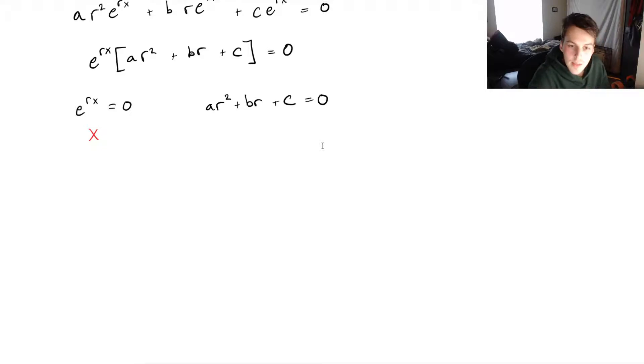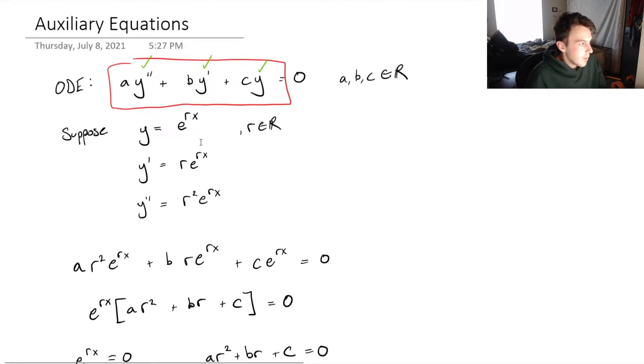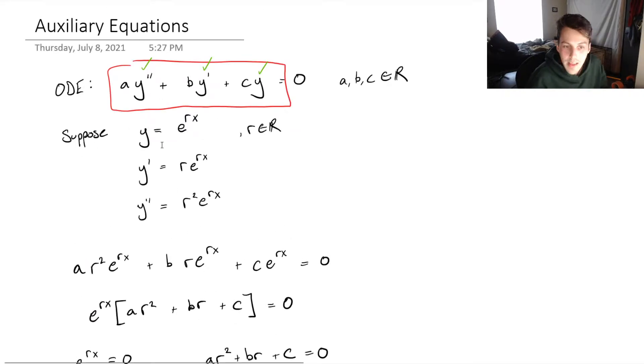And how would you solve this? Well, this brings us way back to high school math. This is just a simple quadratic formula. This is r equals minus b plus or minus the square root of b squared minus 4ac, all of this over 2a. So now all we have to do is solve this quadratic formula, and then we take our r, we plug it back into our y equals e to the rx. And there we have it.